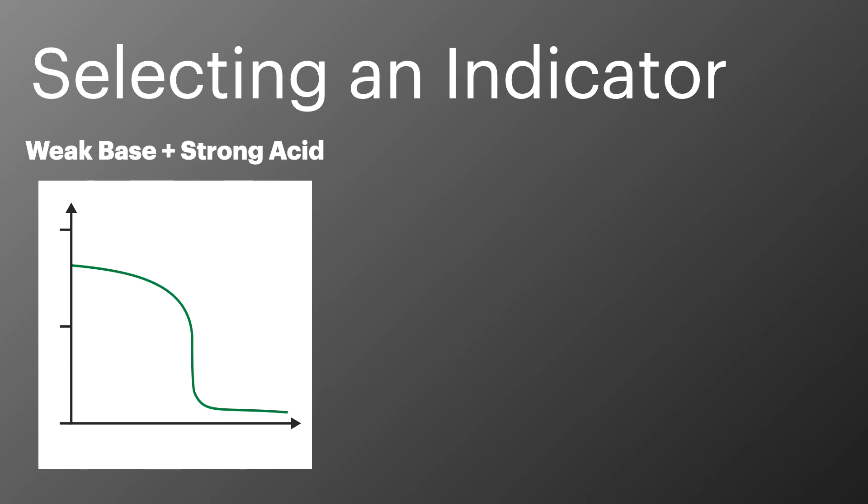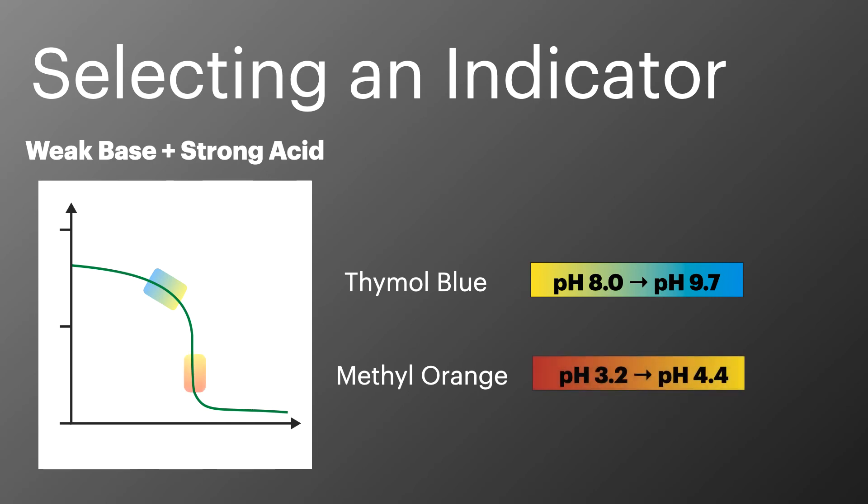In the example of a strong acid being added to a weak base, thymol blue with a pH range of 8 to 9.7 is too high on the pH curve and misses the equivalence point. While methyl orange has a pH range of 3.2 to 4.4 and sits on the vertical part of the graph just over the equivalence point. So this is the most suitable indicator in this case.